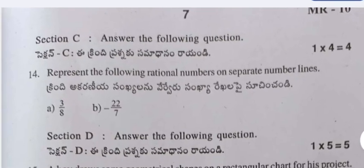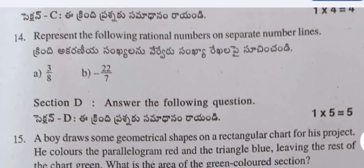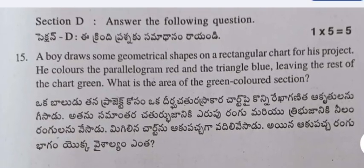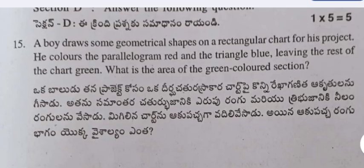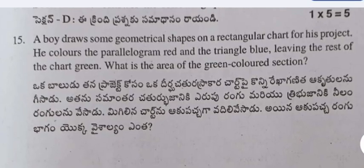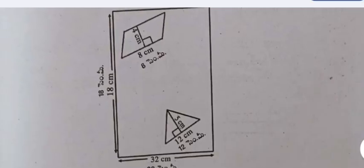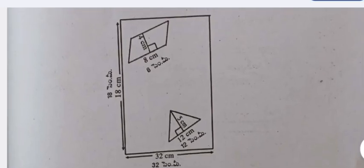Section C: Answer the following questions (1×4 = 4 marks). Represent the following rational numbers on separate number lines: 3 by 8 and minus 22 by 7. Section D: Answer the following question (1×5 = 5 marks). A boy draws geometrical shapes on a rectangular chart for his project. He colors the parallelogram red and the triangle blue, leaving the rest of the chart green. What is the area of the green colored section? The triangle and parallelogram are shown within the rectangle.